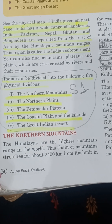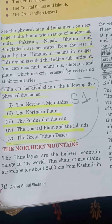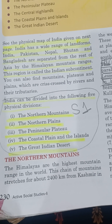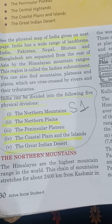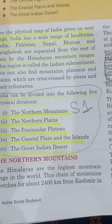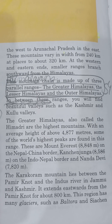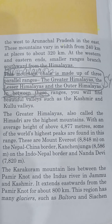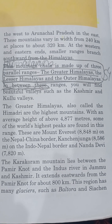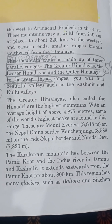First we will talk about the northern mountains. Himalayas are the highest mountain range in the world. This chain of mountains stretches for about 2,400 km from Kashmir in the west to Arunachal Pradesh in the east.